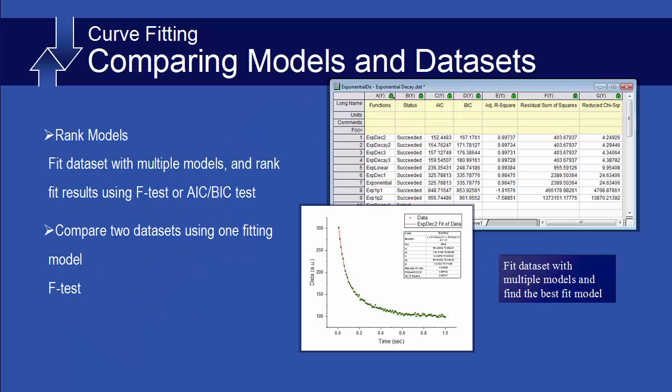In the area of curve fitting, Origin Pro offers tools for comparing datasets or for comparing fitting models. The Rank Models tool lets you fit multiple models to a single dataset and rank the results to find the best fitting model. In contrast, the Compare Dataset tool lets you compare two datasets with a single fitting model.